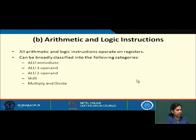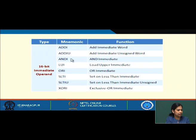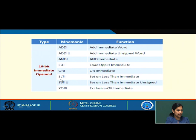Let us move on to arithmetic and logic instructions. MIPS 32 has a wide variety of arithmetic and logic instructions, broadly classified into: ALU immediate, ALU with 3 operands, ALU with 2 operands, shift, and multiply and divide. This set includes add immediate, add immediate word, load upper immediate, OR immediate, and set on less than immediate.